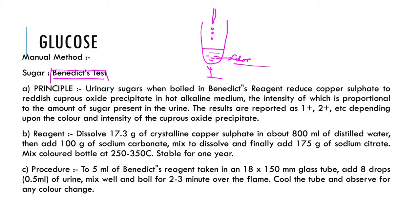So what is the basic principle? Urinary sugar, when it is boiled in Benedict reagent, will reduce the copper sulfate, because the Benedict reagent is made up of copper sulfate. When the copper sulfate — that means Benedict reagent — along with the urinary sugar is boiled, a reddish cuprous oxide precipitate will be formed in a hot alkaline medium, which is also provided by the Benedict reagent. The intensity of the color is proportional to the amount of sugar present: if a large amount of sugar is present, the color change will also be large; if less sugar is present, the color change will also be less.